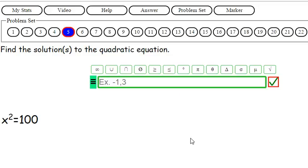It looks like 5.2: x squared is equal to 100.